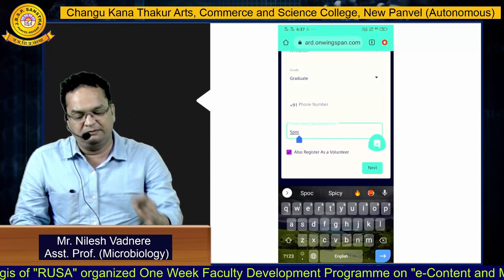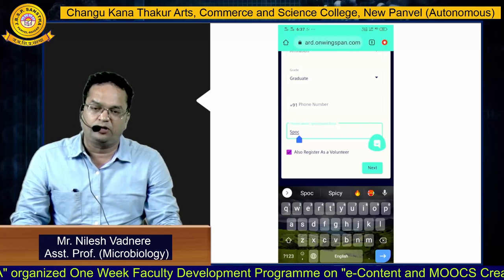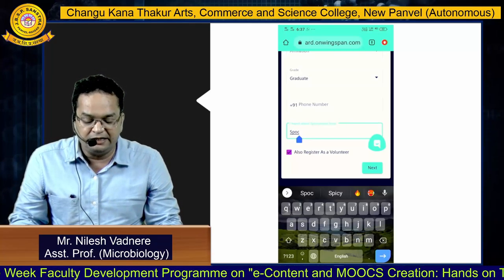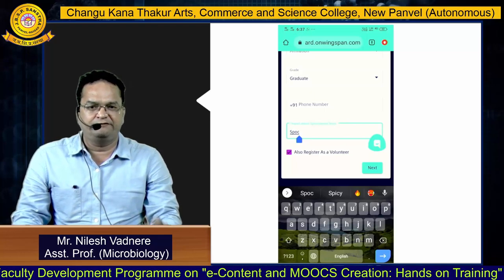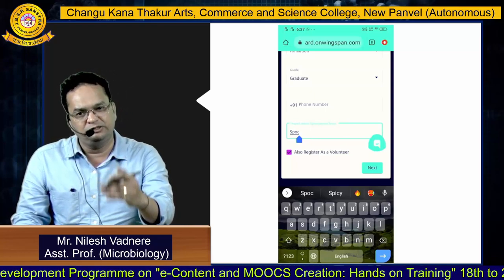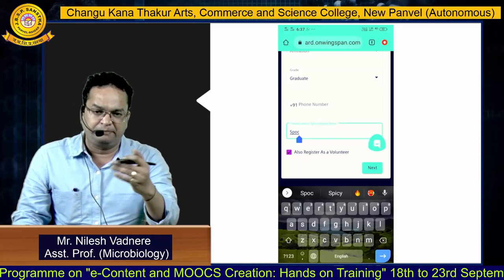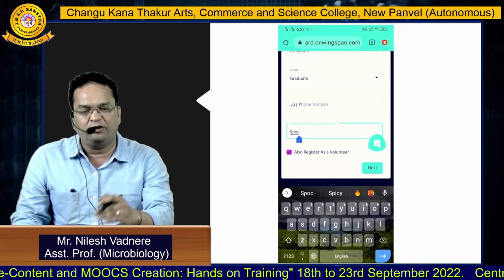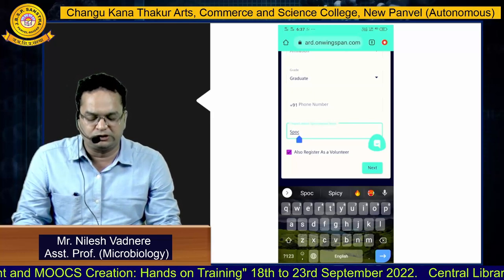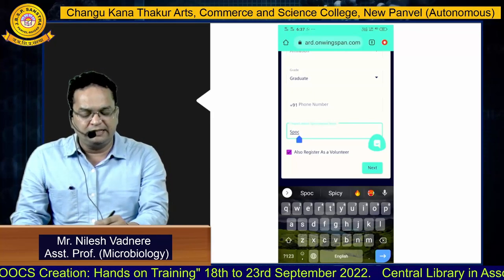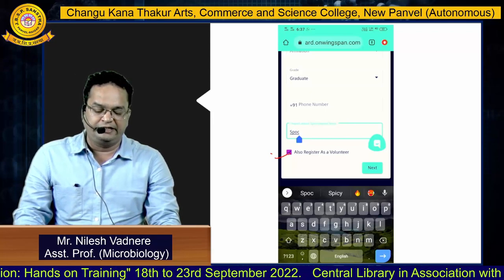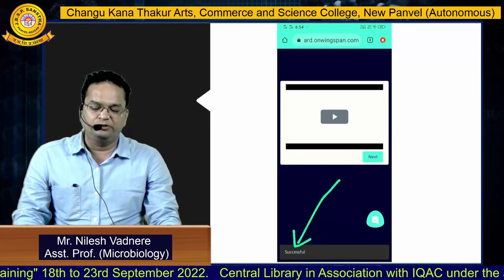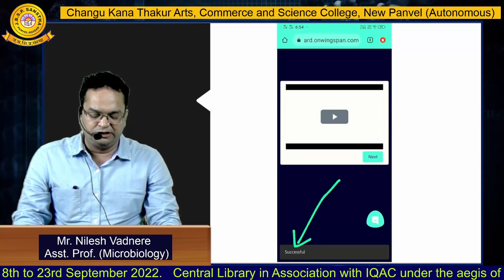Enter your grade — graduate or postgraduate. Enter your phone number and for the 'I heard about Springboard from' field, you can select Department of Higher Education, Joint Director, or write SPOC. Also select register as a volunteer and click Next. Your registration is now successful.